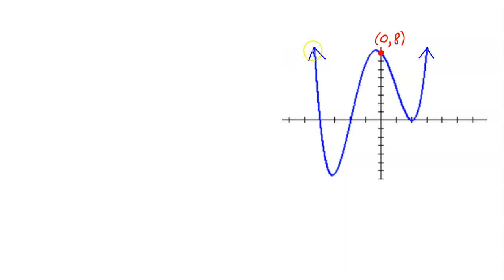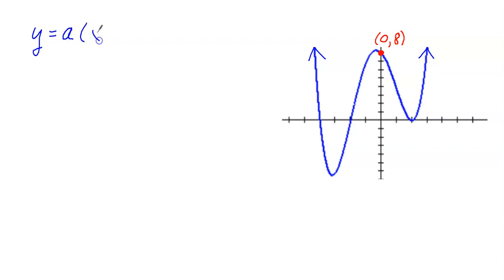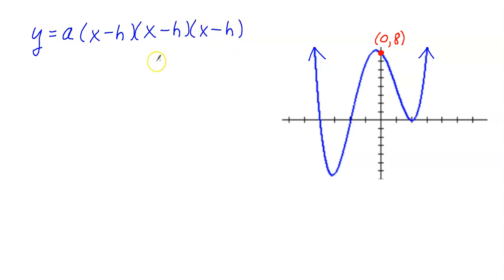Let's go ahead and make the equation that models this polynomial function. The first thing I do is write the general form for any polynomial equation. It looks like this: Y equals A times (X minus H) times (X minus H) times (X minus H). So this is always my first step.